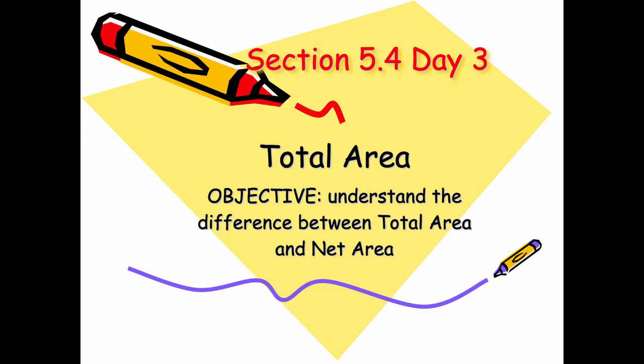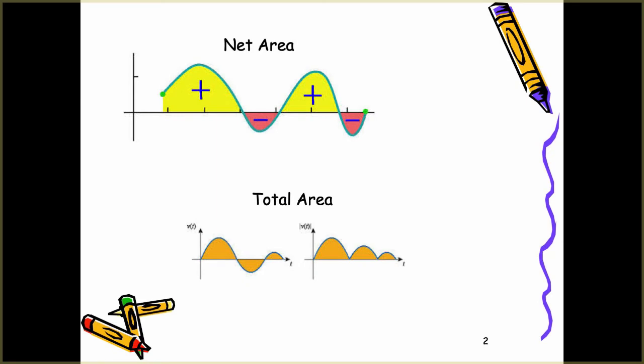Understand the difference between total area and net area. For net area, we take whatever's above and subtract off whatever's below the x-axis. That gives us our net area, as you can see in the curve on the top. You have two areas with positive, two areas with negative. When you add the positives and negatives together, you get your net area.